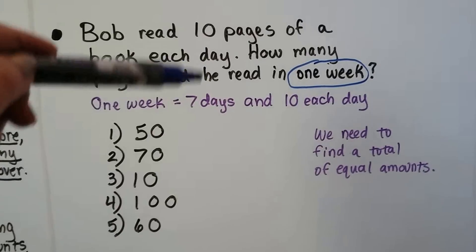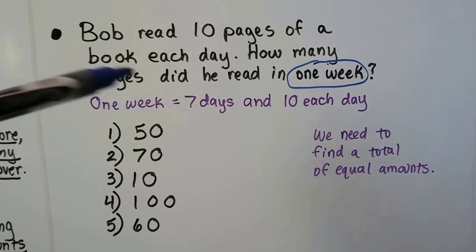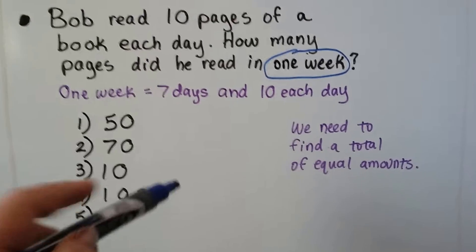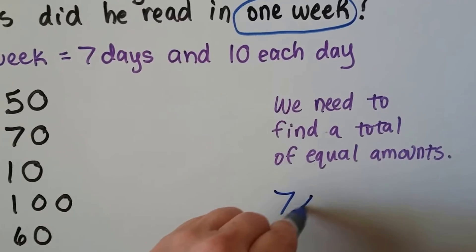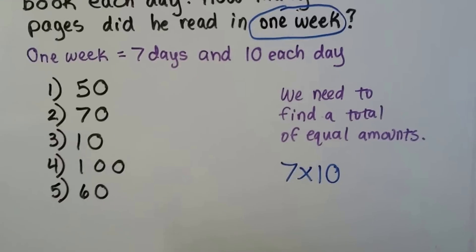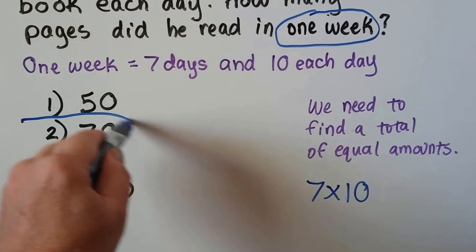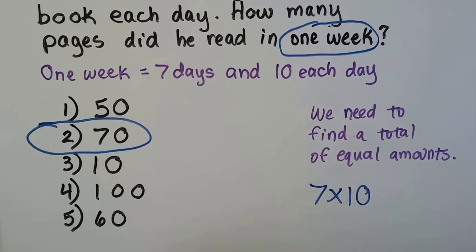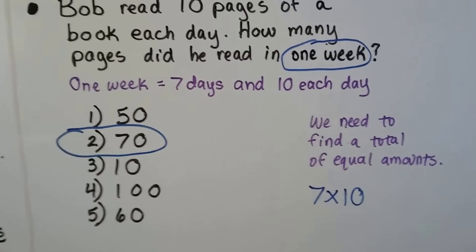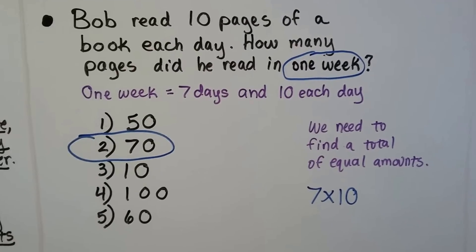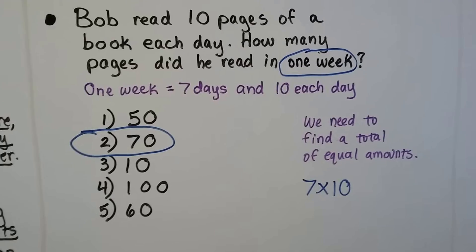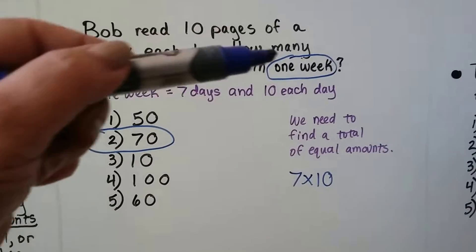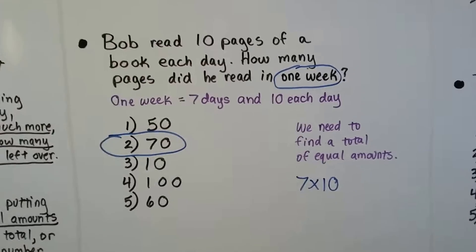So we need seven tens. We need seven times ten, and seven times ten is 70. So you'd fill out the second bubble on your answer sheet. Just be really careful if it tries to trick you. Look out for those numbers that are written as words.